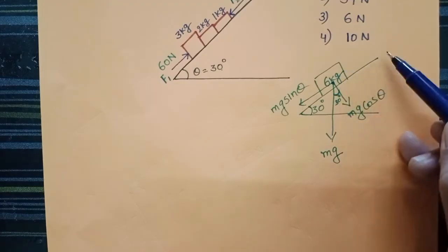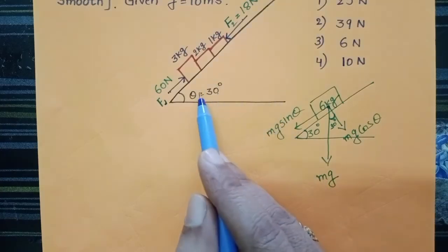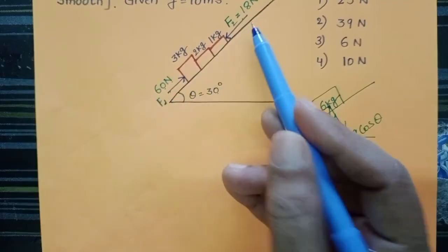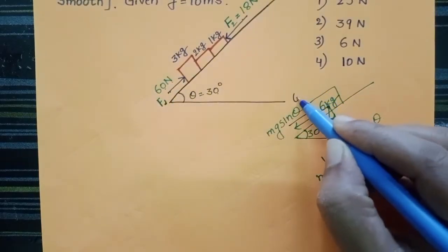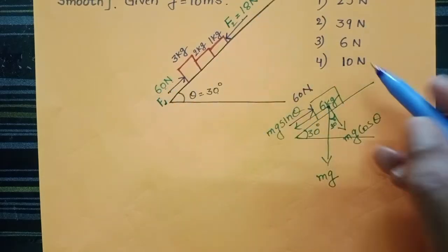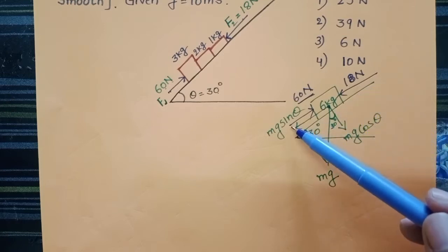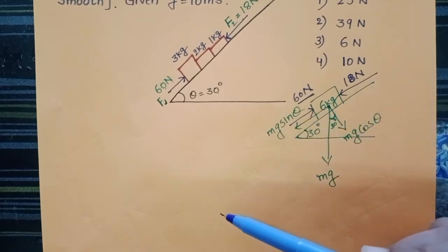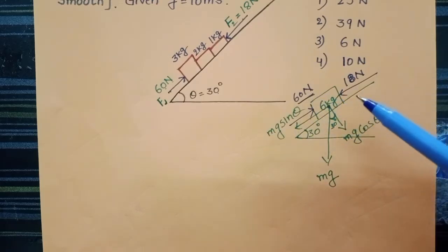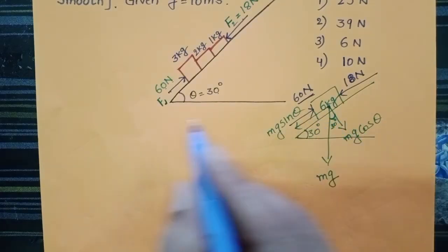There are no frictional forces acting on the surface. Observe the given diagram: 16 newtons of force is acting in the upward direction, and 18 newtons of force is acting in the downward direction. So 18 newtons and mg sinθ are both acting in the downward direction, while 16 newtons is acting in the upward direction. We need to determine in which direction the resultant force acts.